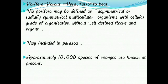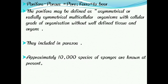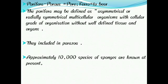Porifera is the second phylum of the animal kingdom. The word Porifera comes from Latin: 'porous' means pores and 'ferre' means to bear. The pore-bearing animals are called Porifera. Porifera may be defined as asymmetrical or radially symmetrical multicellular organisms with a cellular grade of organization, without well-defined tissues and organs. Asymmetrical animals means the body parts are irregularly arranged around the central axis.